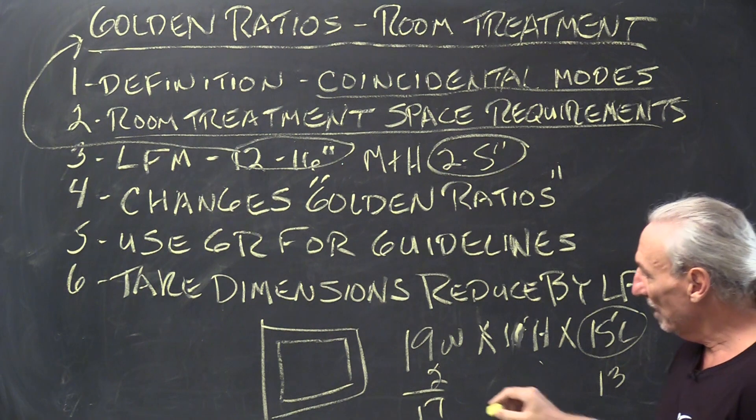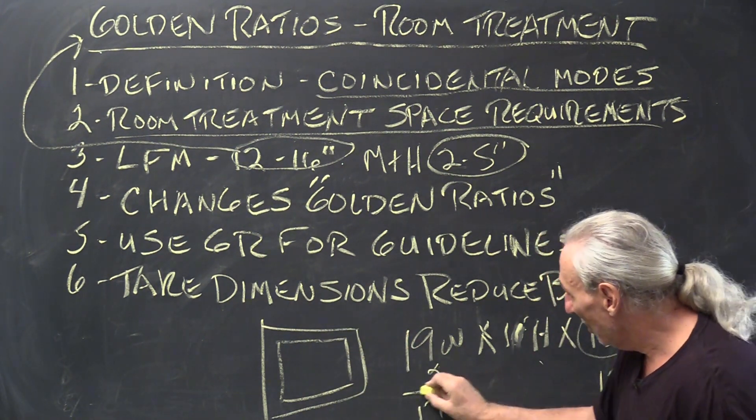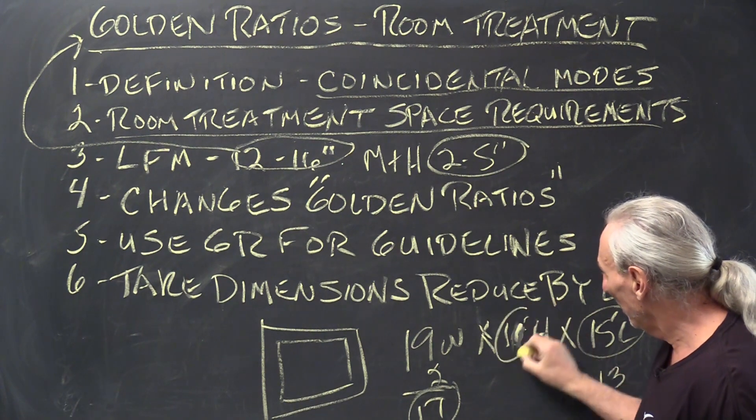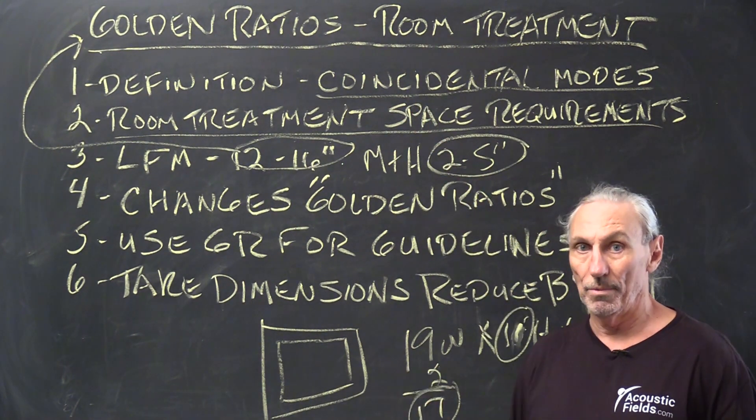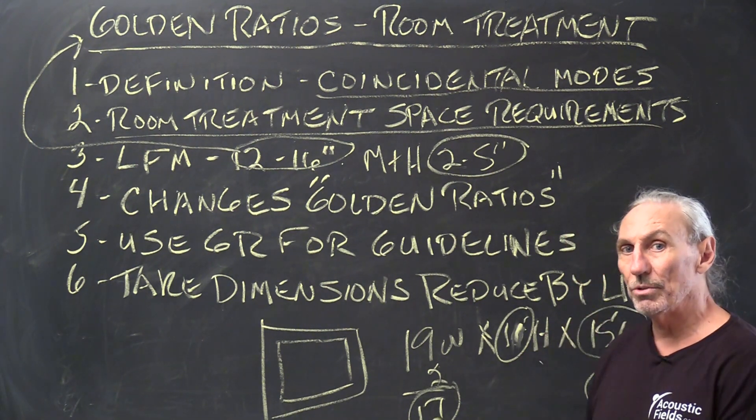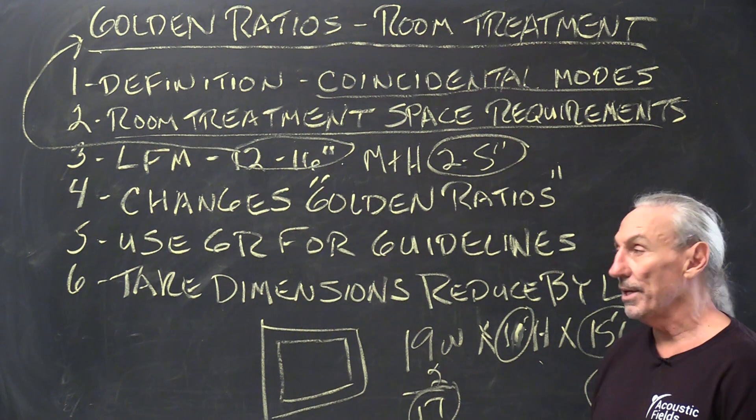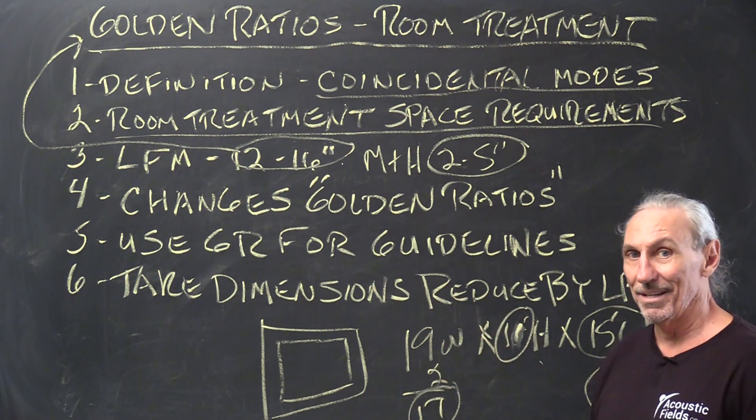So now take your new dimensions 17, 11 and 13 and see if that's a golden ratio. It may not be. So you got to kind of do two sets of calculations with these golden ratios. They're good to use as guidelines but it's not the end.